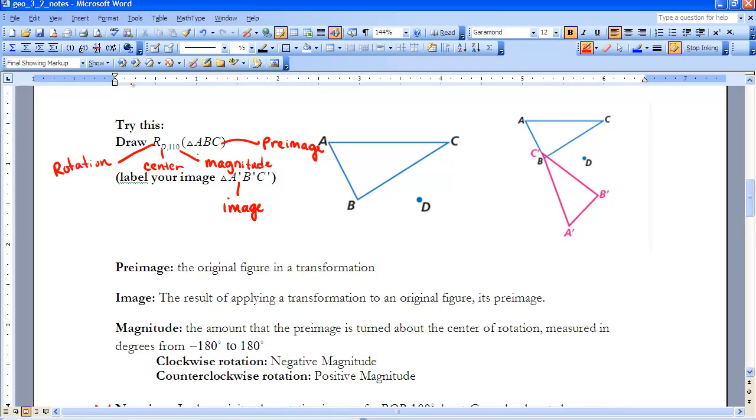And once again, if you take and measure from, we'll take point A. So if you measure from A to D to A prime, this is our pre-image, this is our image, we would have 110 degrees.